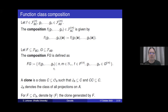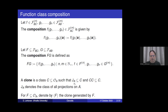Using this concept of function class composition, we can easily speak of certain interesting properties of function classes. For example, we can define that the clone on a set A is a class C of operations on A that contains all projections on A, and the composition of C with itself is contained in C. We denote by F in angle brackets the clone generated by the set F — the least clone containing the given set of functions.